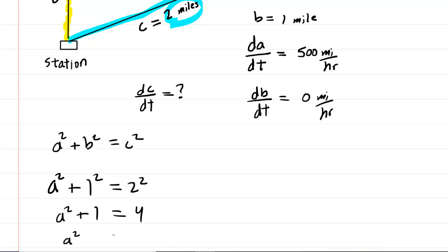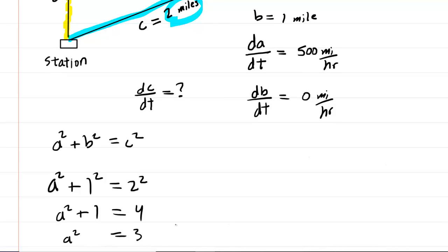A squared plus 1 equals 4. Subtract 1 from both sides so that A squared is equal to 3. And then we can see, of course, that A will equal the square root of 3. And this would be in miles.